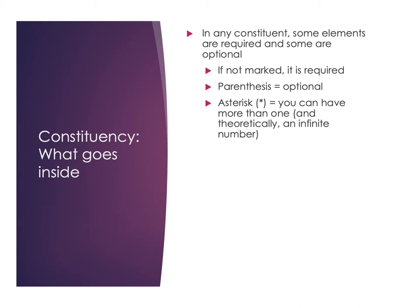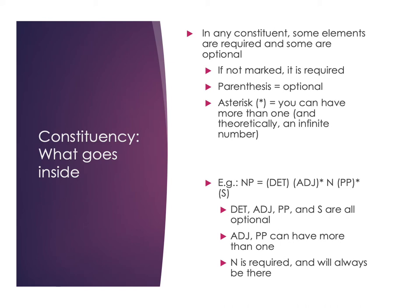A noun phrase in English has to have a noun — there's no marking on that noun, so it's required no matter what; it's what the phrase is named after. Then you can have a determiner (with no asterisk, so only one), adjectives (theoretically as many as you want), prepositional phrases (theoretically as many as you want), and a clause S, so we can have dependent clauses in our noun phrases as well. The determiners, adjectives, prepositional phrases, and dependent clauses are all optional, but no matter what, there needs to be a noun.